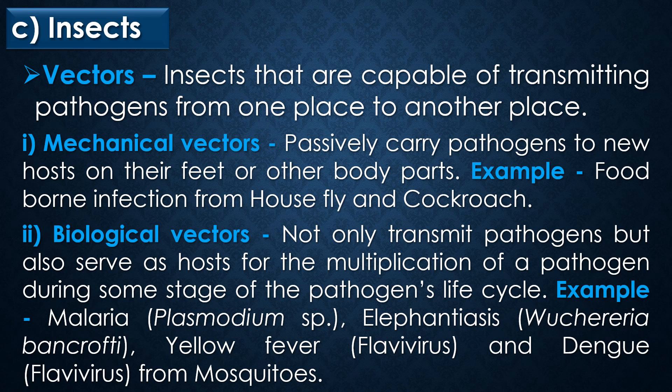The third source of microbial infection is insects. Insects capable of transmitting pathogens from one place to another are called vectors. Insect vectors are classified into two types: mechanical vectors and biological vectors. Mechanical vectors passively carry pathogens to new hosts on their feet or other body parts — for example, foodborne infections from houseflies and cockroaches.